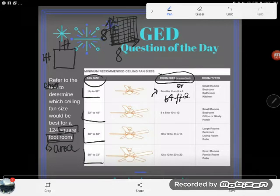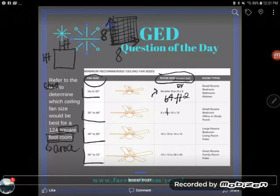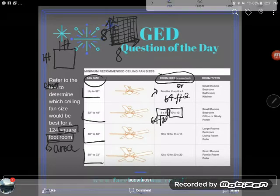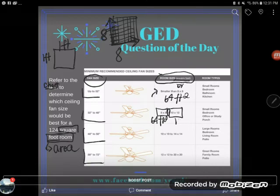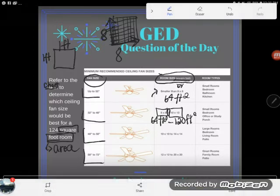Let's keep going. This one has a range. We have an 8 by 8 which we already figured out was 64 square feet, but it goes to a 10 by 12, 10 feet by 12 feet. Again, 10 rows of 12 squares would give us 120 square feet. So this fan works best for if you have a room that's about 64 square feet to 120 square feet, still a little too small for my room.